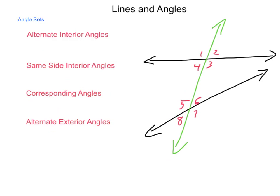We have four concepts at play. First is alternate interior angles. Alternate means on opposite sides — so left and right, or top and bottom of the transversal — and interior means inside. So angles 4 and 6 would be considered alternate interior, as would angles 3 and 5.